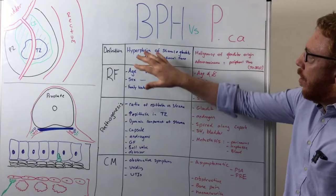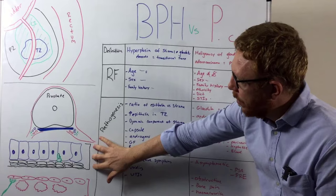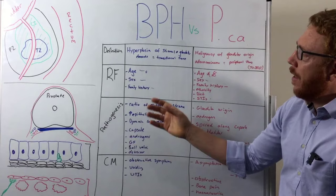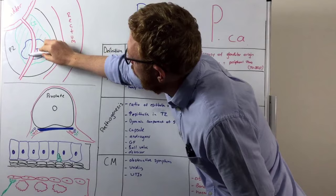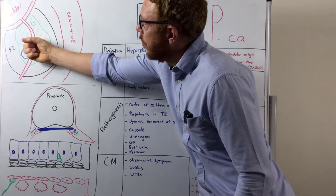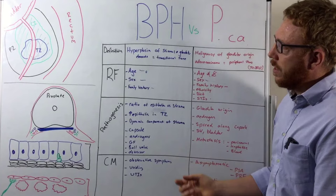Moving to pathogenesis — how does BPH come about? There seems to be an increased ratio between epithelial and stromal cells; both increase in number, hence the hyperplasia. The epithelium is most exaggerated in the transitional zone, right near where the urethra passes. As cell numbers increase, the urethra begins to be constricted, producing the obstructive symptoms seen clinically.